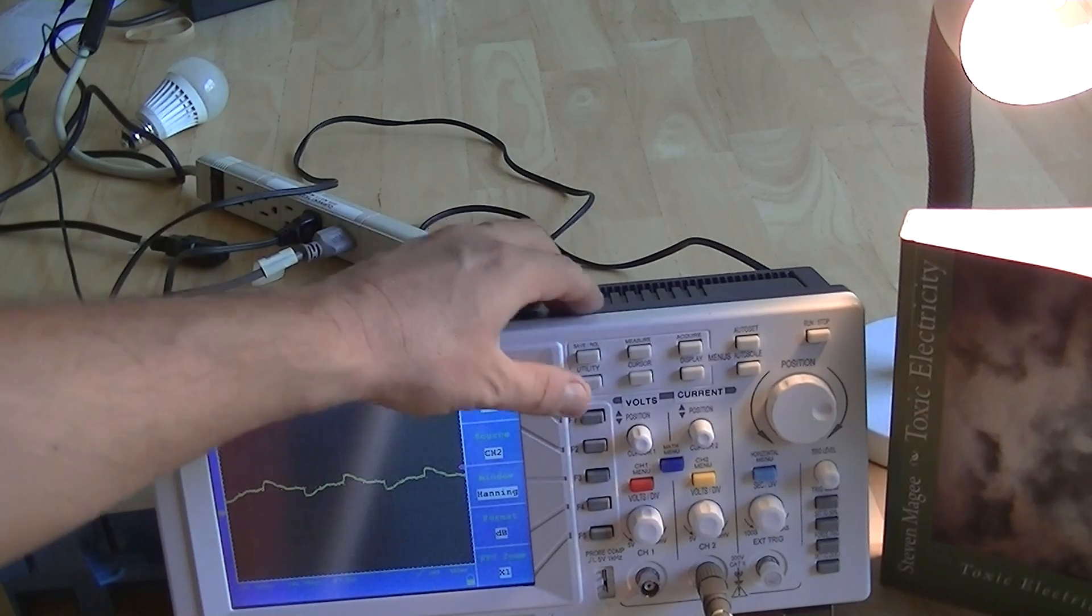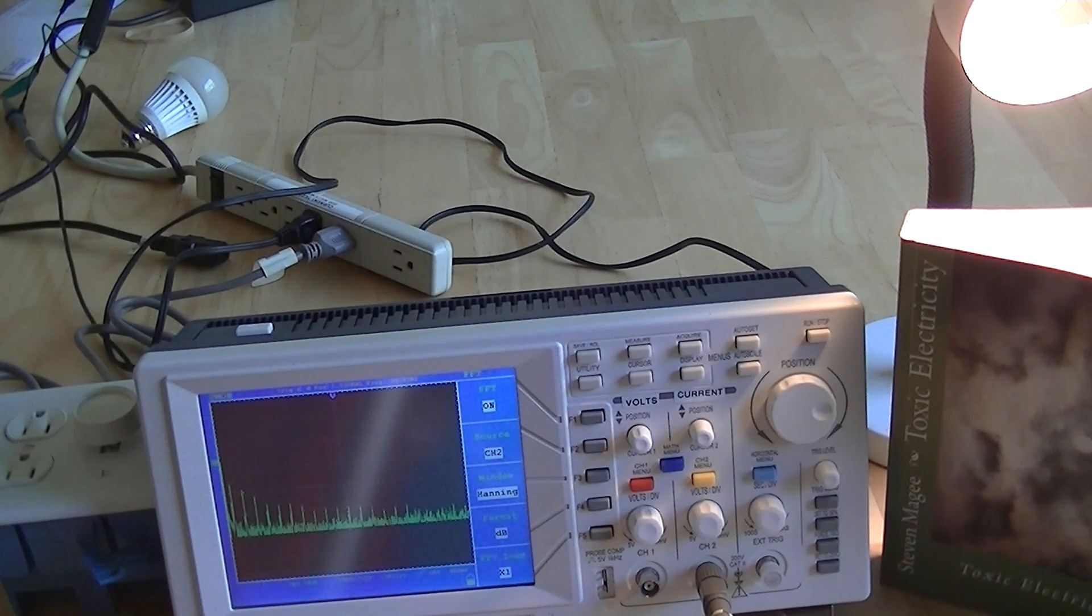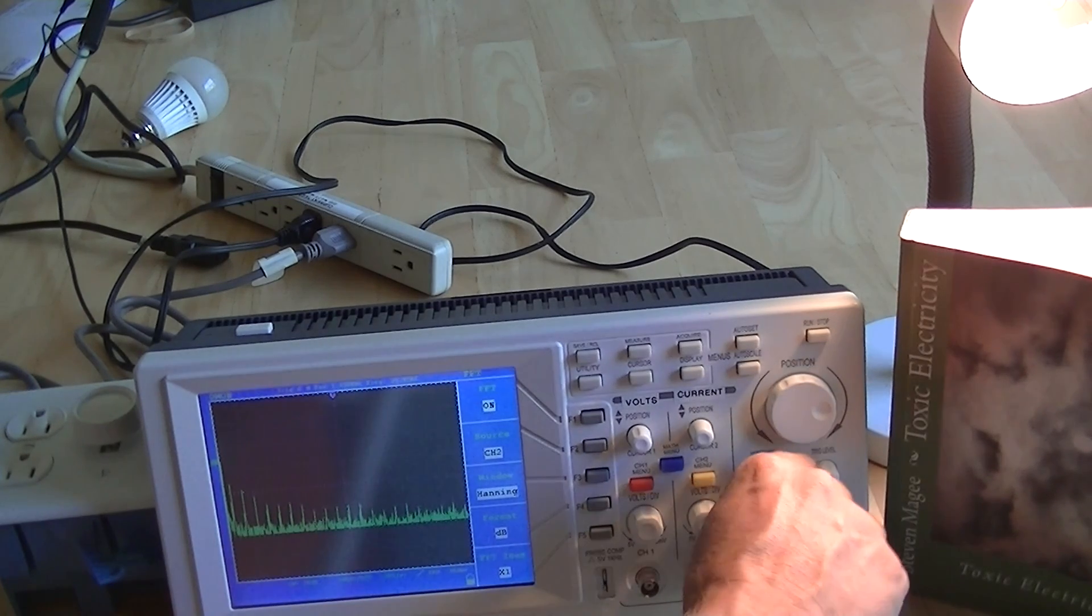So let's have a look at the fast Fourier transfer function. We can see there's a number of harmonics on there. So let's extend that out a little bit.